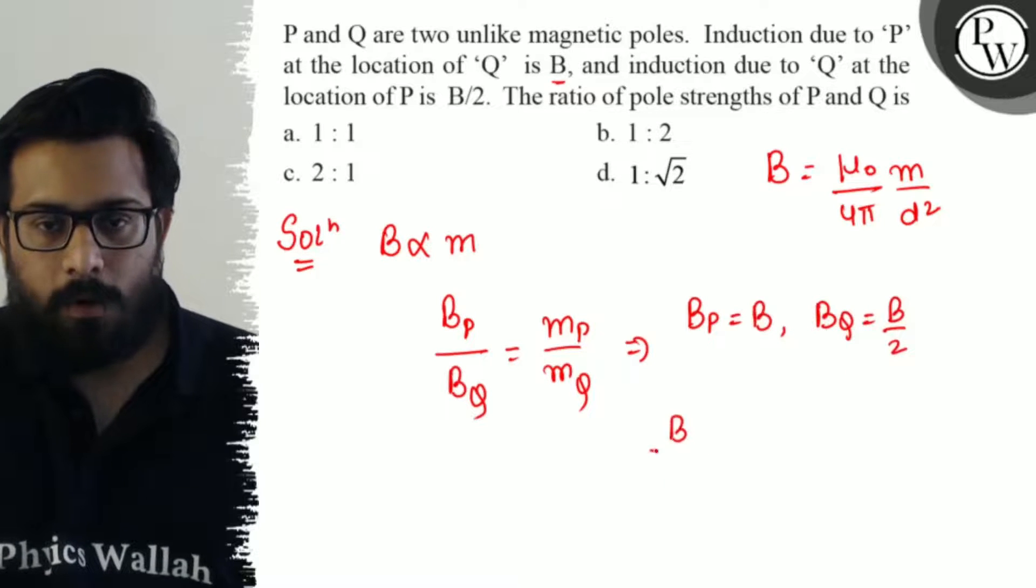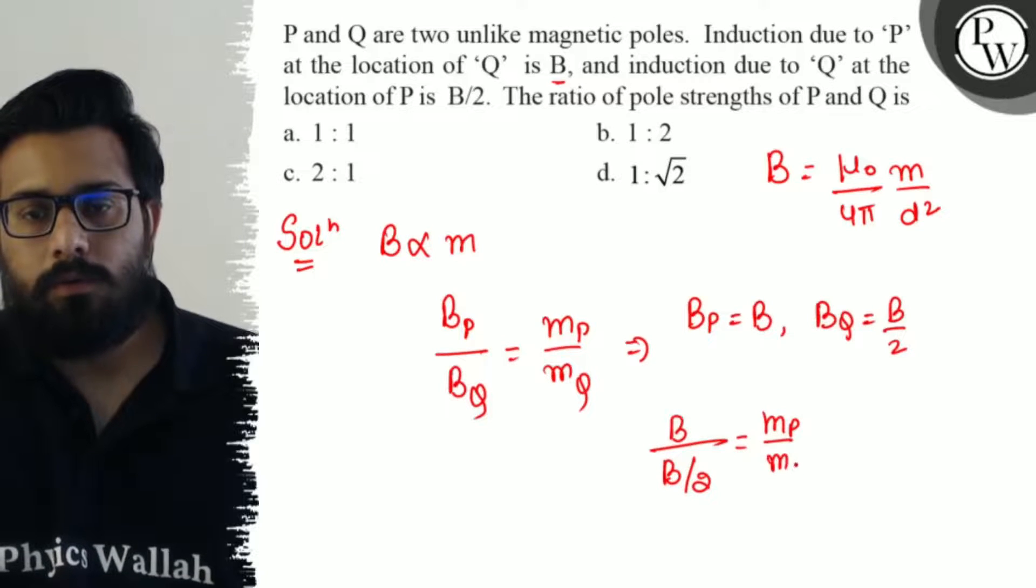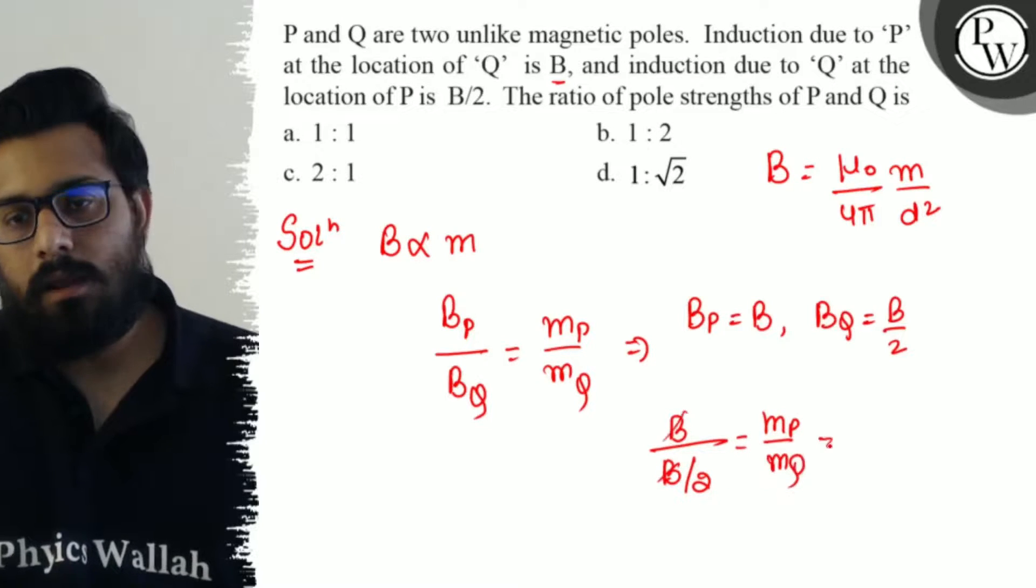So B upon B/2 equals Mp by MQ. B will cancel, giving Mp by MQ equals 2/1.